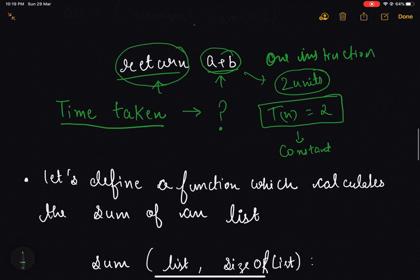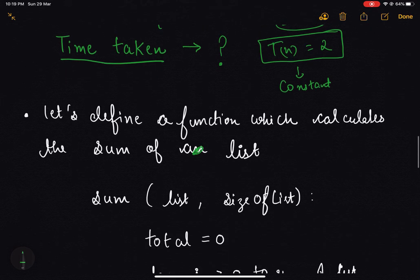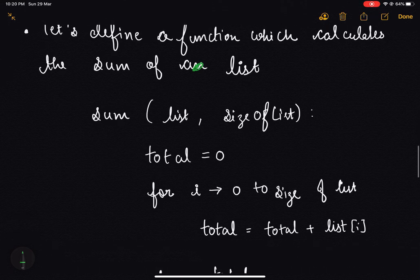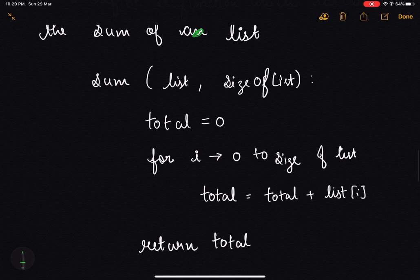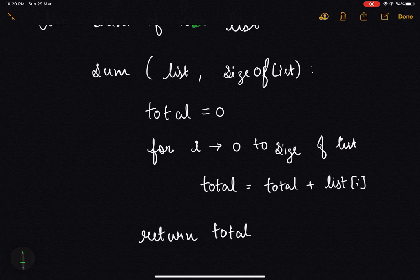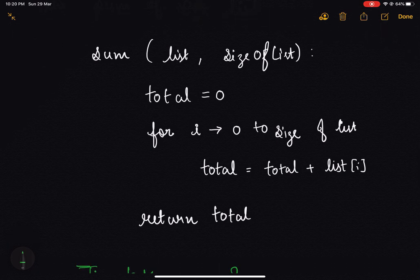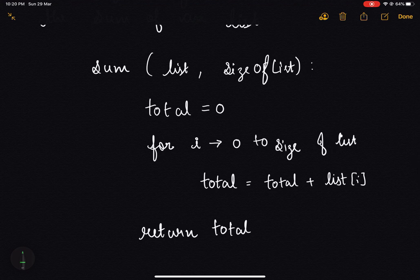Now let's define a function which calculates the sum of a list. This function takes two arguments: the list and the size of the list. We define total equal to zero, iterate over the list adding all elements into total, and return total at the end. In this case we have four instructions.